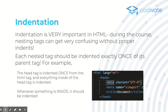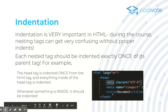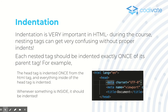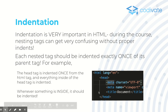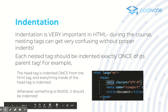Indentation is even more important than white space, especially in HTML where you'll have a lot of nested tags. Each nested tag should be indented exactly once relative to its parent tag. For example, the head tag is indented once from the HTML tag, and all your meta tags are indented once from the head tag. In VS Code, it produces a guide line, making it easier to see matching closing tags.